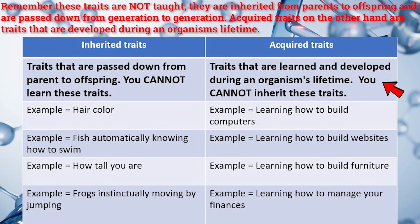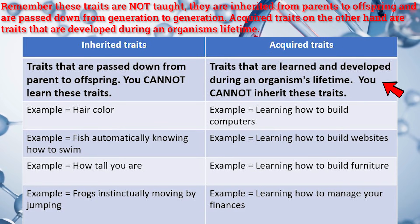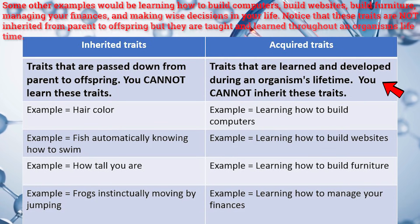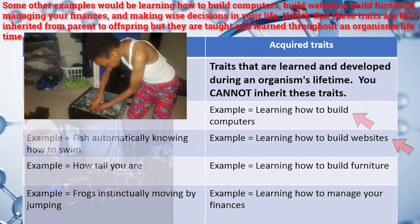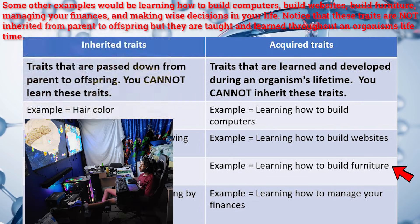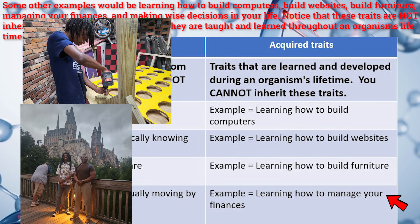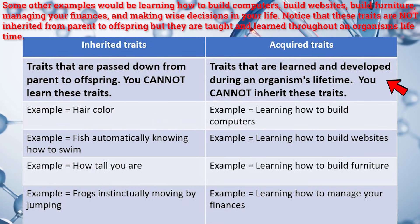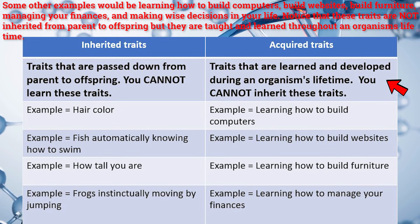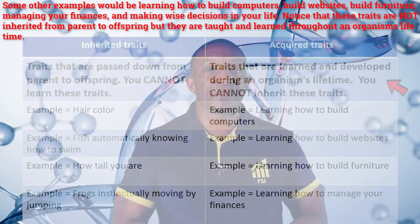Acquired traits, on the other hand, are traits that are developed during an organism's lifetime. Some other examples would be learning how to build computers, build websites, build furniture, managing your finances, and making wise decisions in your life. Notice that these traits are not inherited from parents to offspring, but they are taught and learned throughout an organism's lifetime.